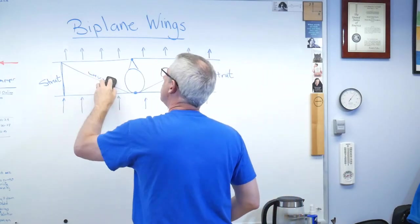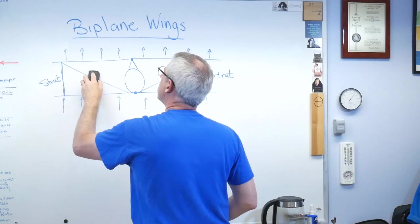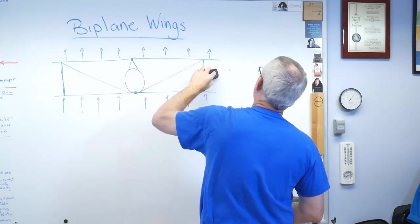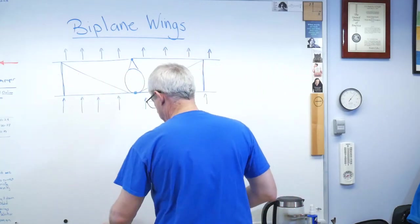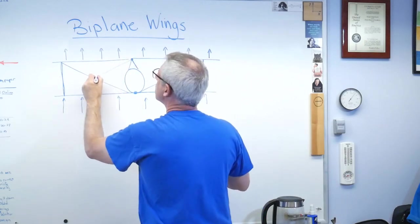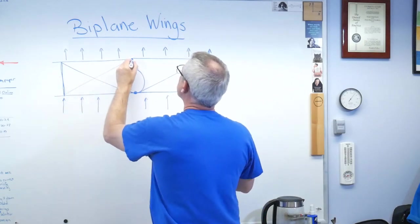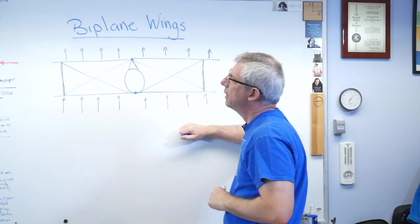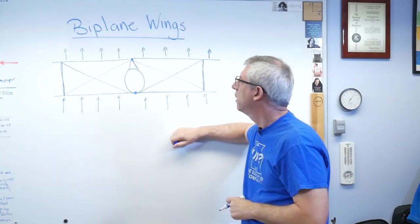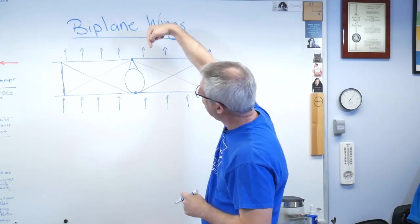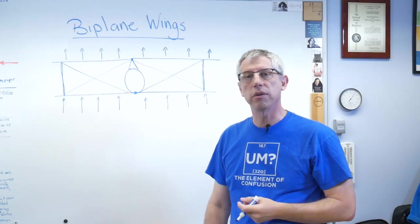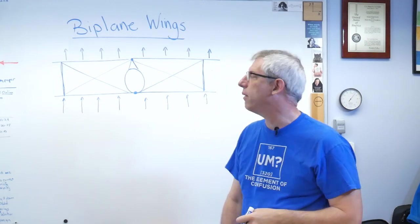So what do they do? Do you just make it so you can never fly upside down, so you can never pull negative G? No, that's not going to work. What they do is they put a second set of cables in. Now you've got a structure that can bear loads that way and bear loads this way, so the plane can fly right side up or upside down.